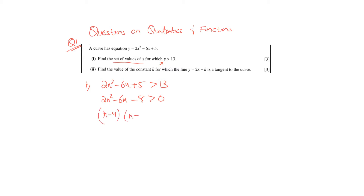The factors come out to be (x minus 4) and (x plus 1). You can use middle-term breaking or the quadratic formula — just factorize it. These two factors give us the roots, which are minus 1 and 4.